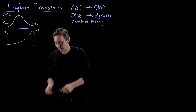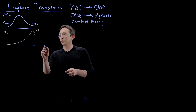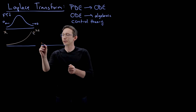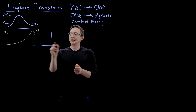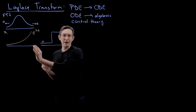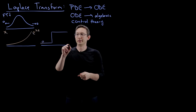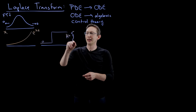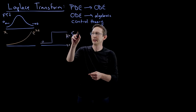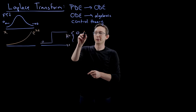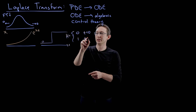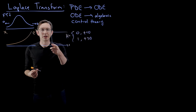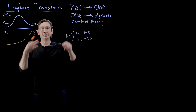Another example of a function that is tricky or impossible to Fourier transform is the Heaviside function — named after Oliver Heaviside — which is zero for negative time and one for positive time. More explicitly, it's zero for t less than zero and one for t greater than or equal to zero. This function also can't be easily Fourier transformed because it doesn't taper off to zero at plus infinity.